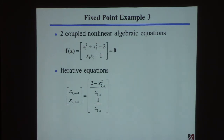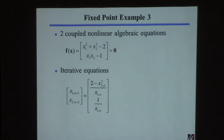You can do more than one equation at a time. Here's an example with two equations and two unknowns. This is my vector function F — F1 and F2. The bold zero means a vector of zeros. I want to solve these two equations for x1 and x2.